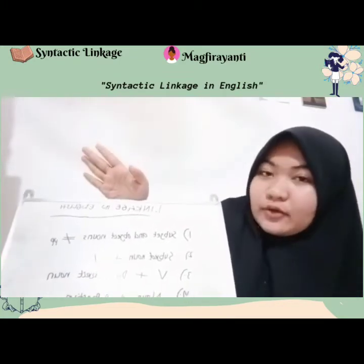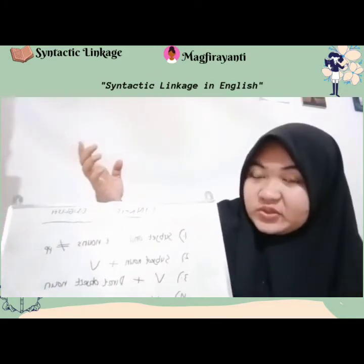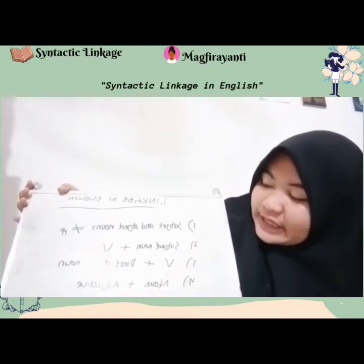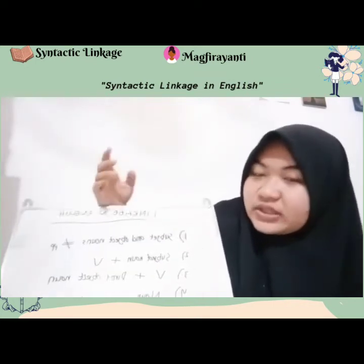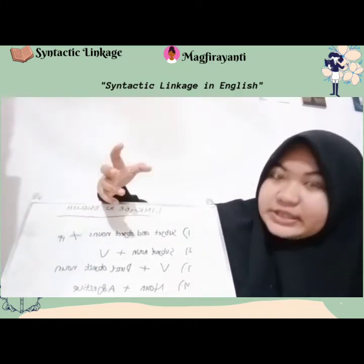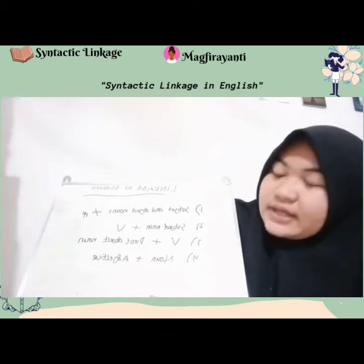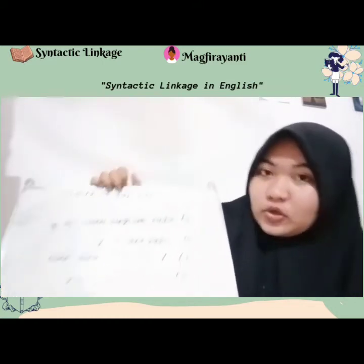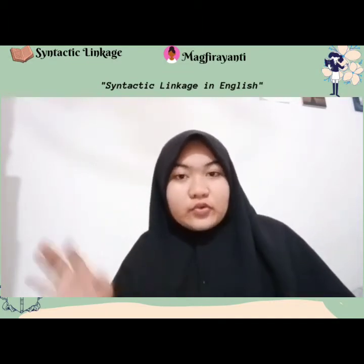The second point is: subject nouns are immediately to the left of the verb. Jadi, subject nouns-nya itu selalu berada sebelum verb. The third point is: the direct object nouns is immediately to the right of the verb. Jadi, direct object nouns itu selalu berada di sebelah kanan atau setelah kata kerja. The last point is: the adjective can be added to a noun, and the noun is placed to the left of the adjective.